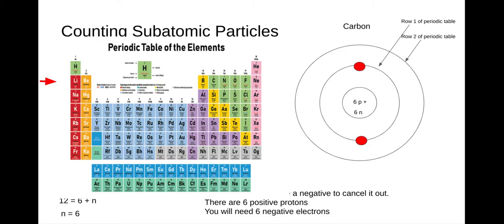If we go to the second row of the periodic table and count over, carbon is the fourth element over. So that means we're going to put four electrons on that second ring. So if you count them up, we have six protons, six neutrons, and a total of six electrons in carbon.